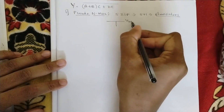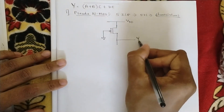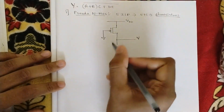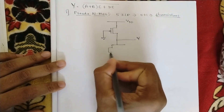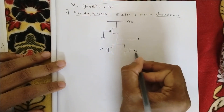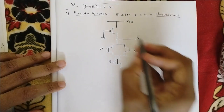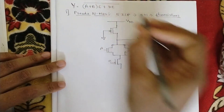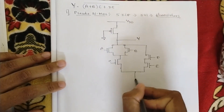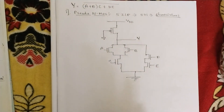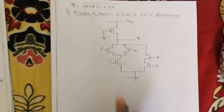In the VDD pull-up part, we have only one PMOS transistor with its gate terminal permanently connected to ground, and the output is taken from this node. For the pull-down NMOS part: A + B means A and B are in parallel; multiplied by C means C is in series; plus D·E means another parallel branch where D and E are in series. This completes the pseudo NMOS circuit for five inputs: one PMOS and five NMOS transistors — six transistors total.